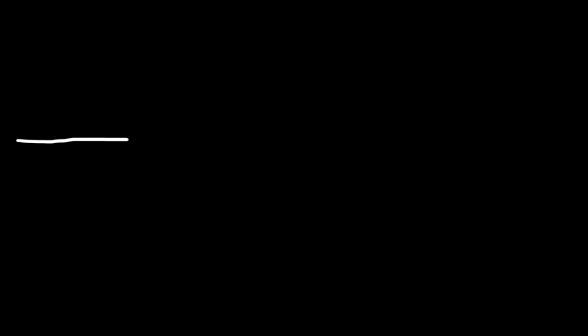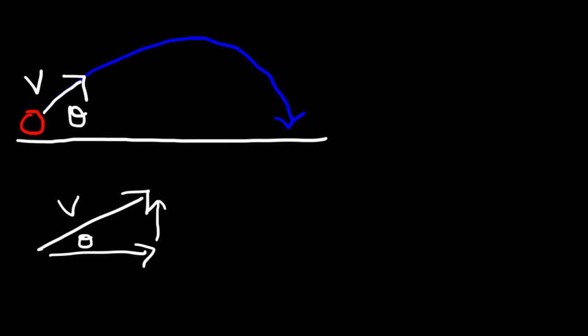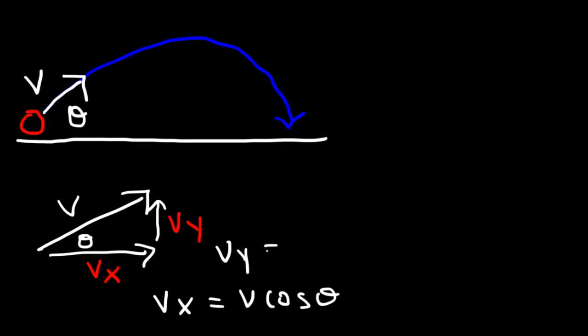The second type of trajectory involves a ball kicked from the ground at an angle theta relative to the horizontal, launched at speed V. This V is not V_x or V_y — it's the resultant velocity. The x component is V_x equals V·cosθ, the y component is V_y equals V·sinθ, and the magnitude is V equals √(V_x² + V_y²). The angle is theta equals inverse tangent of V_y over V_x.